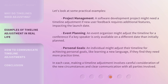Let's look at some practical examples. Project Management: a software development project might need a timeline adjustment if new user feedback requires additional features, impacting the launch date. Event Planning: an event organizer might adjust the timeline for a conference if a key speaker is only available on a different date than initially planned. Personal Goals: an individual might adjust their timeline for achieving personal goals, like learning a new language, if they find they need more practice time. In each case, making a timeline adjustment involves careful consideration of the new circumstances and clear communication with all parties involved.